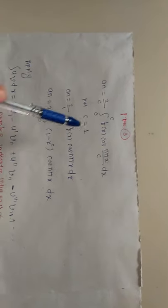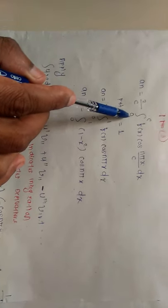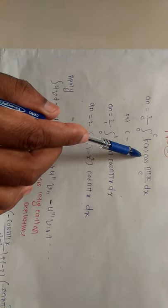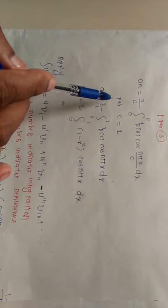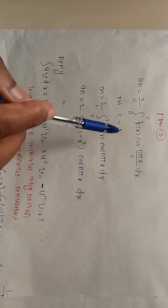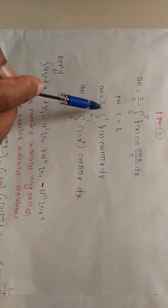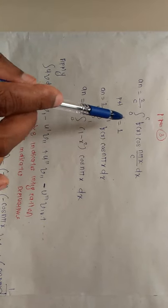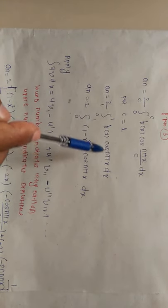Next, we will find the value of aₙ. In general, aₙ = (2/c) ∫₀^c f(x) cos(nπx/c) dx. Substituting c = 1, this becomes aₙ = 2 ∫₀^1 (1 - x²) cos(nπx) dx.